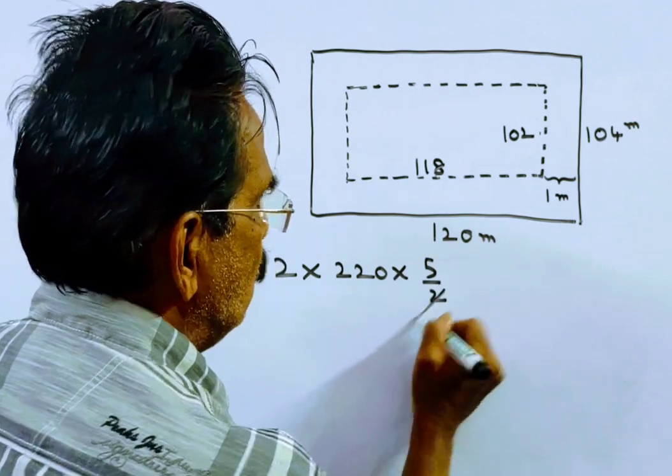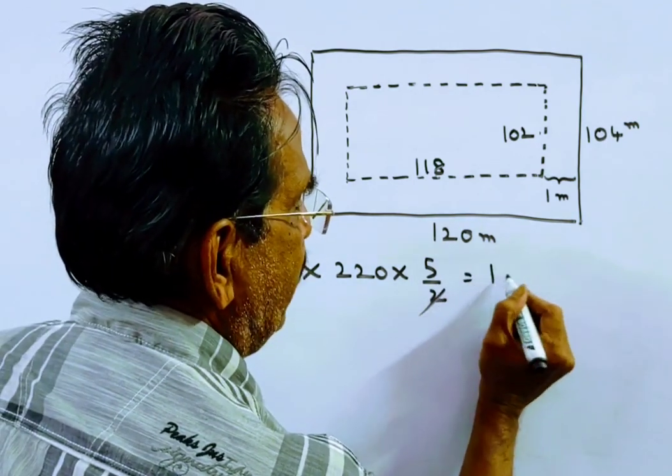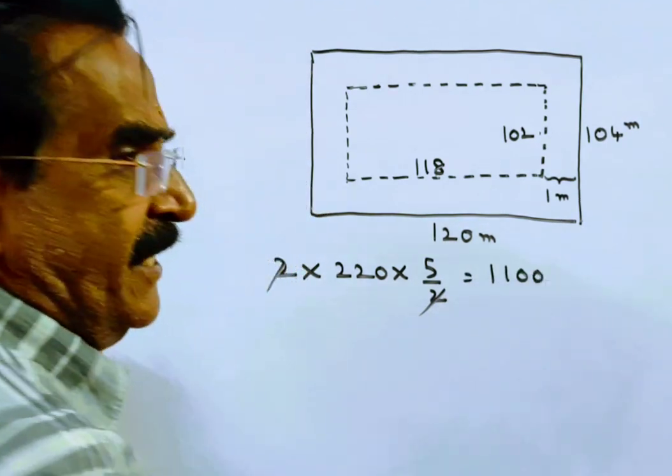5 by 2. So 22 gets cancelled, giving 220 into 5, which equals 550 rupees. Thank you.